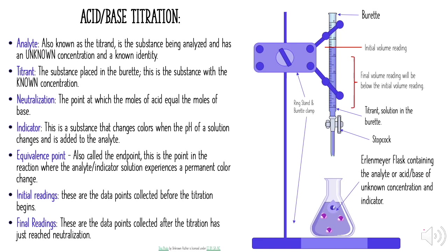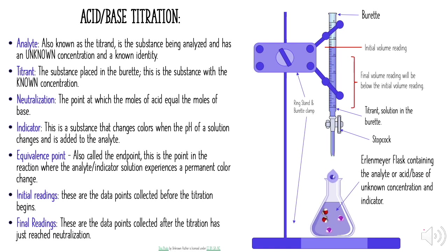Let's take a closer look at what's going on in a titration. I've got a ring stand with a burette clamp holding a burette, suspended over an Erlenmeyer flask. When we do titrations, we have names for each substance: the analyte, which is the substance we do not know the concentration of, always goes in the Erlenmeyer flask at the bottom. Our titrant, which is the substance we do know the concentration of, goes up in the burette.